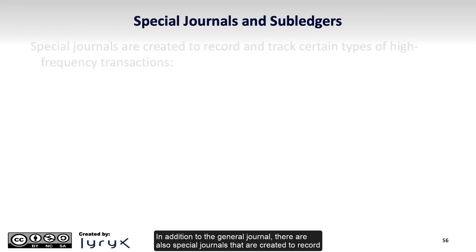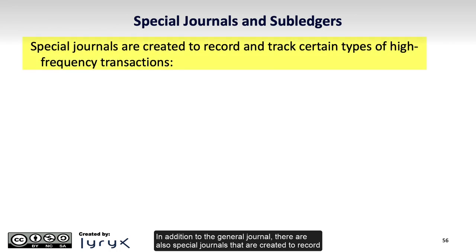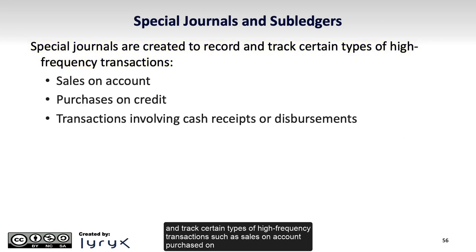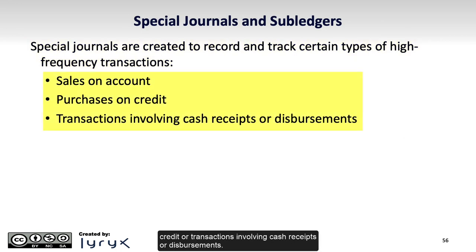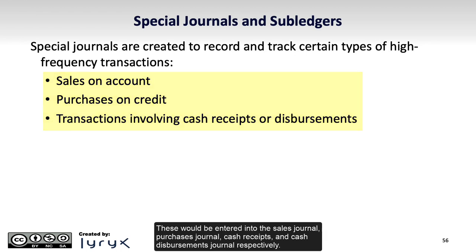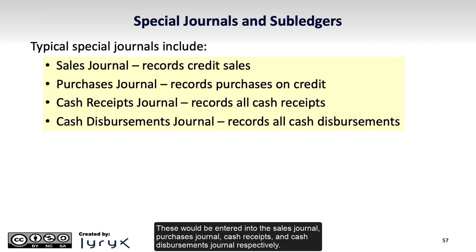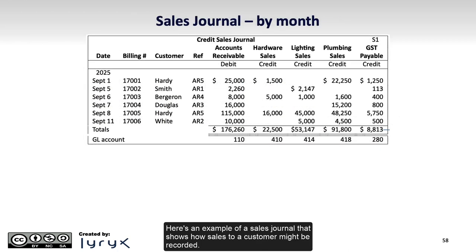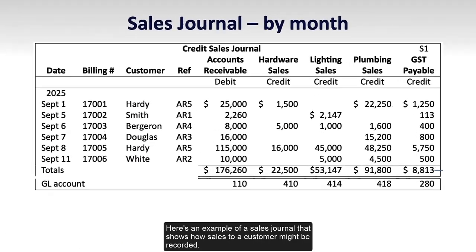In addition to the general journal, there are also special journals that are created to record and track certain types of high-frequency transactions, such as sales on account, purchases on credit, or transactions involving cash receipts or disbursements. These would be entered into the sales journal, purchases journal, cash receipts journal, and cash disbursements journal respectively. In days past, these used to be separate books, journals, or diaries.